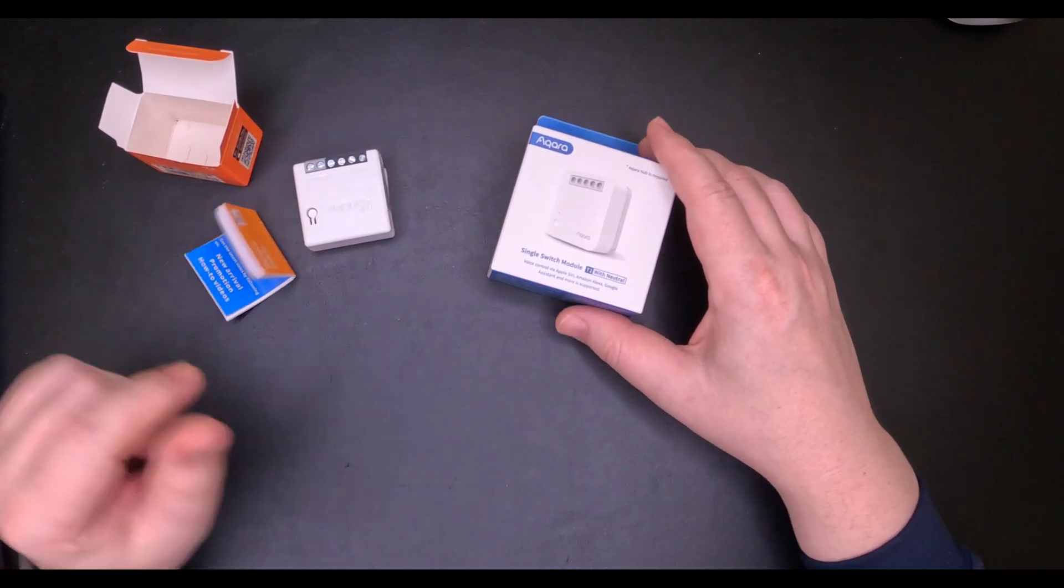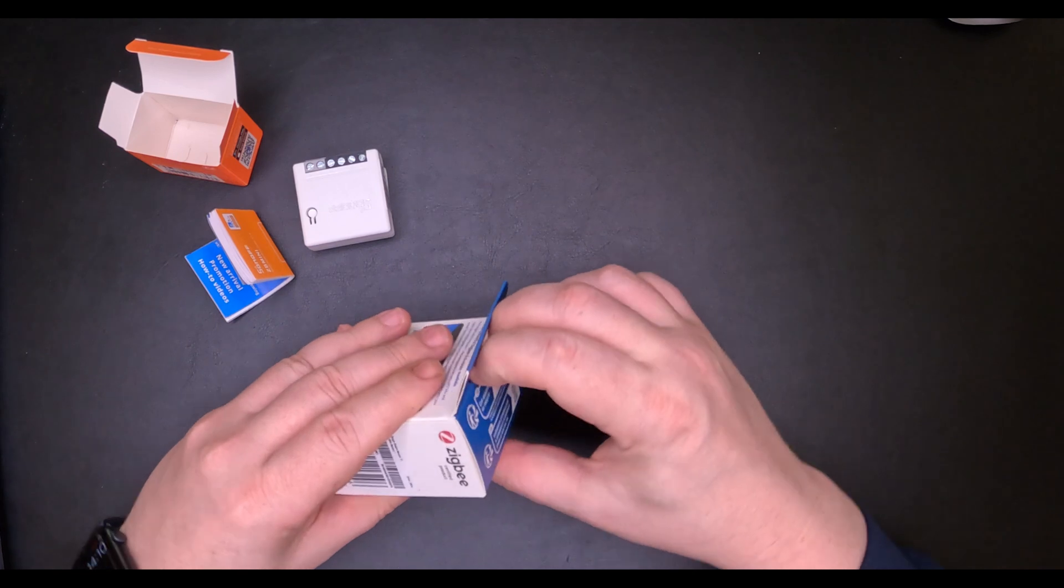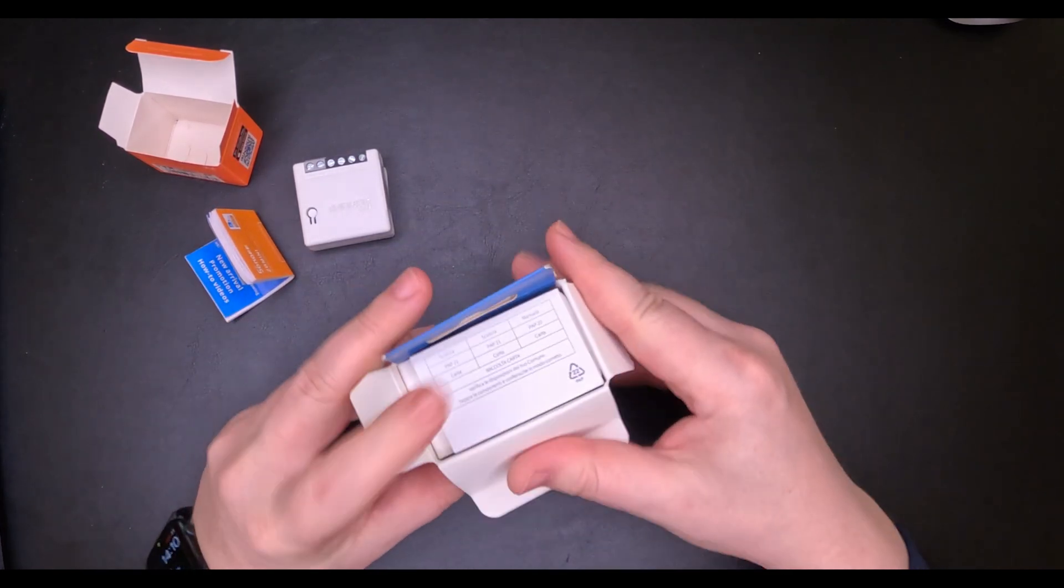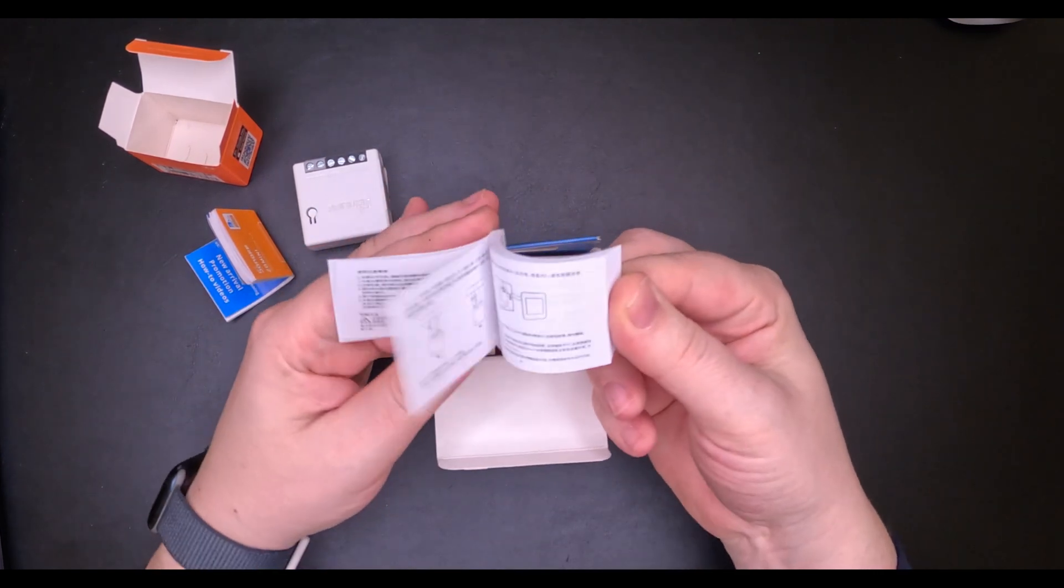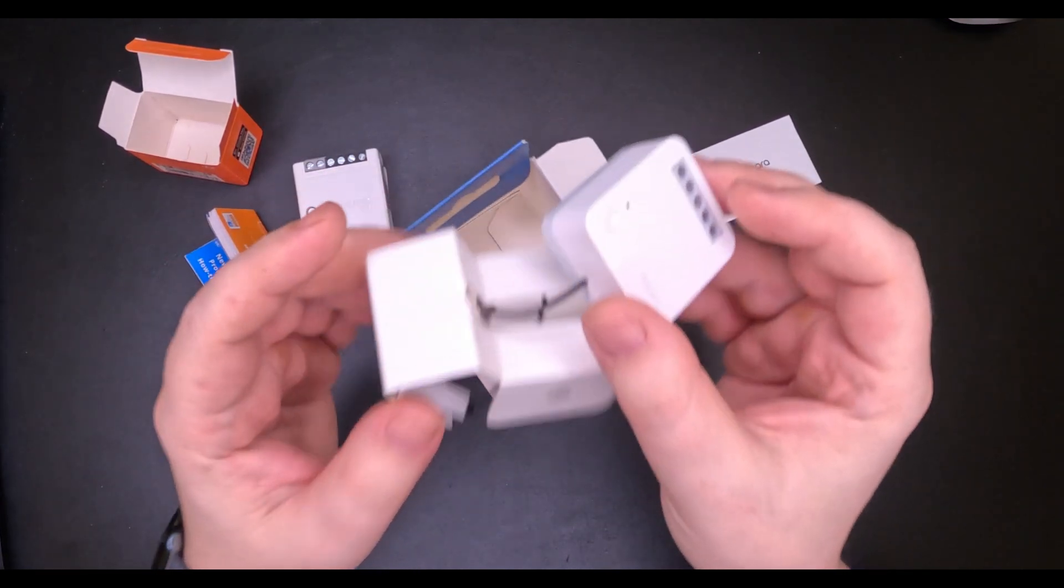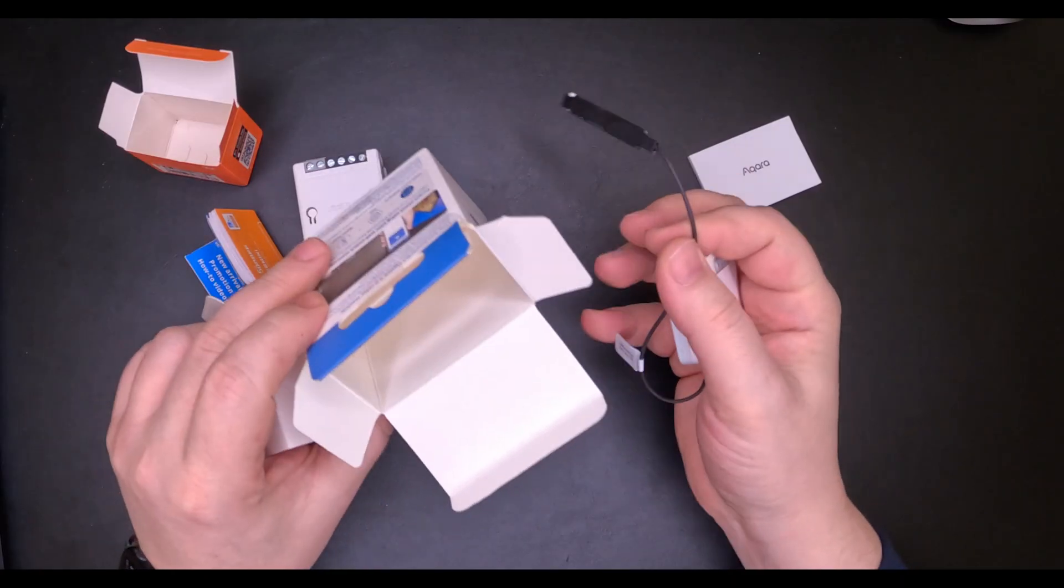So we have the Sonoff Zigbee Mini. And now let's open the Aquara T1. The Aquara T1 comes in a way bigger package. Once you open it up, we have a really nice manual, the relay itself, and an empty box.